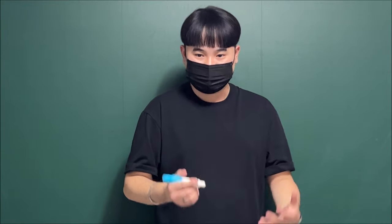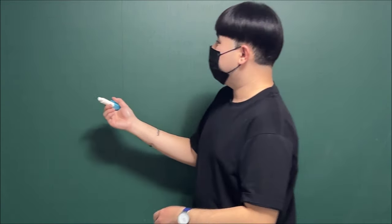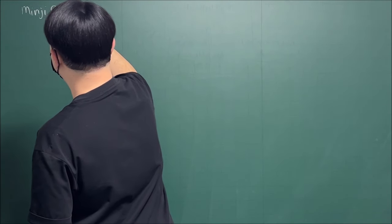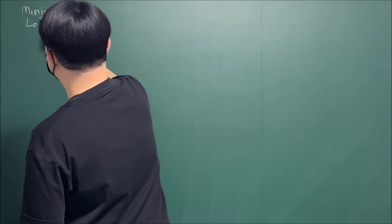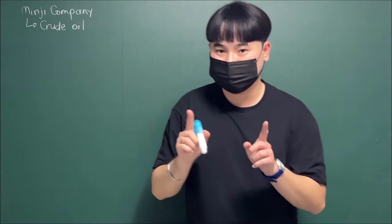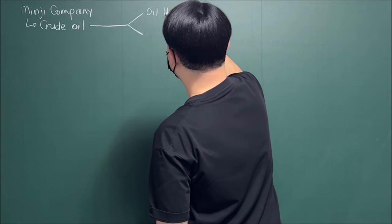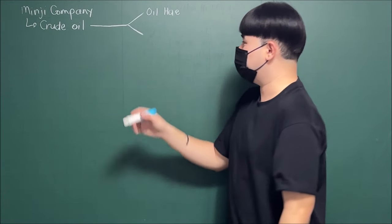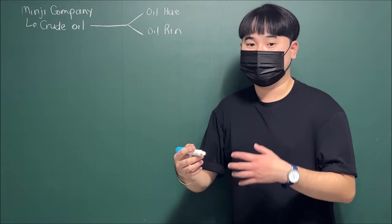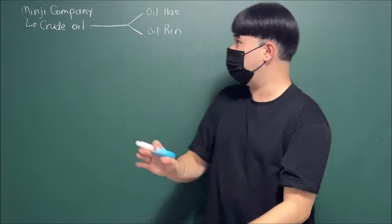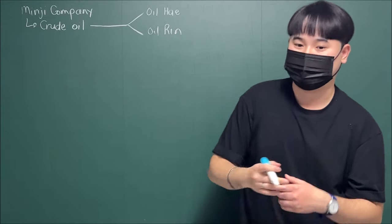Hello, and now we are ready to solve problems. Before anything else, please download the handout — the link is available in the description box. Let's answer Problem Number 1. A company buys crude oil. Refining this oil results in two products at split-off point: Oil H and Oil R. Our main input is crude oil, and from the joint production process we get Oil H and Oil R.